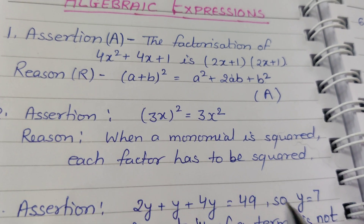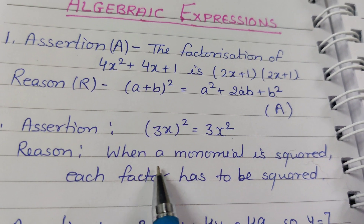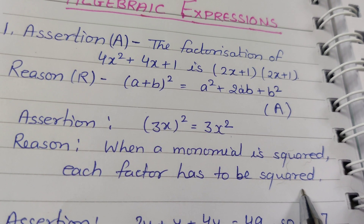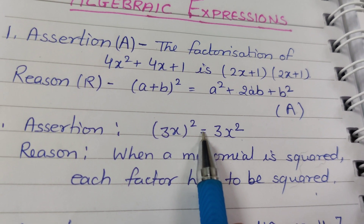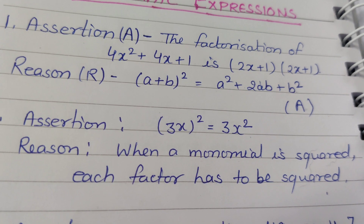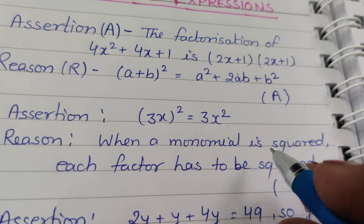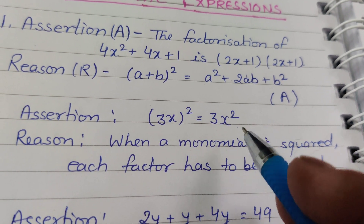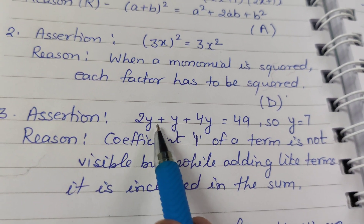Question 2 — Assertion: (3x)² = 3x². Reason: When a monomial is squared, each factor has to be squared. The assertion is false because (3x)² = 9x², not 3x². Since assertion is false and reason is true, the answer is D.